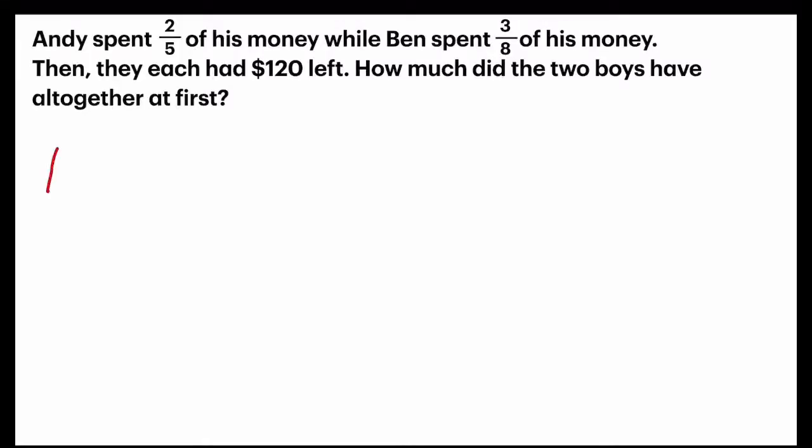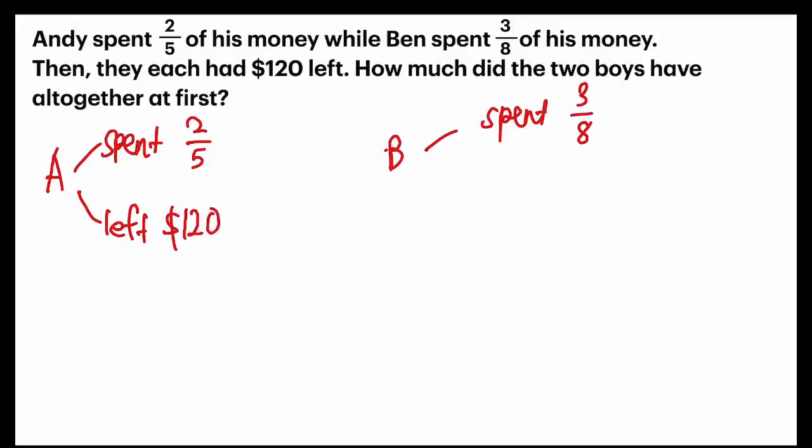Andy spent 2/5 of his money while Ben spent 3/8 of his money. Then they each had $120 left. The question wants to know, how much did the two boys have altogether at first?